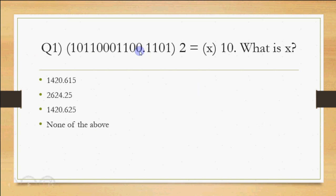If I count the digits, they are positions 0 through 10. So the calculation will be: 1 × 2^10 + 0 + 1 × 2^8 + 1 × 2^7. Then positions 6, 5, and 4 are 0. Then we have 2^2, 2^1, and so on. Some values come with negative powers as well.